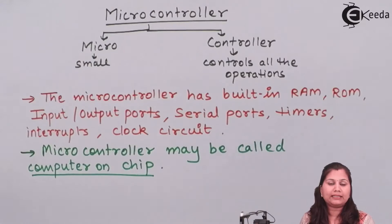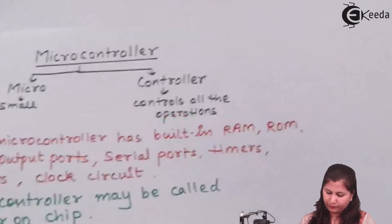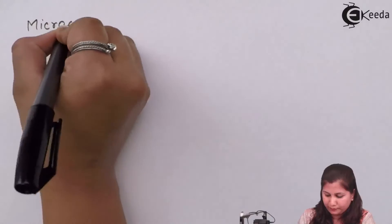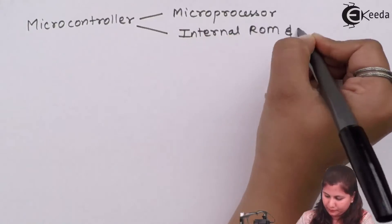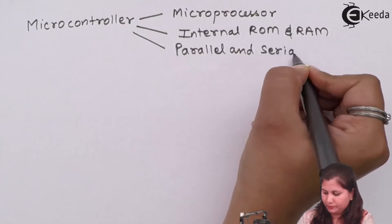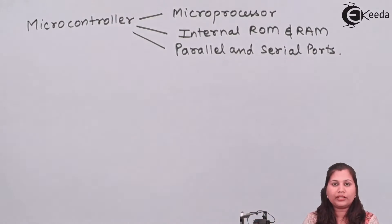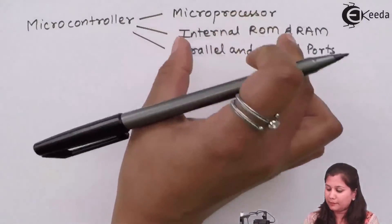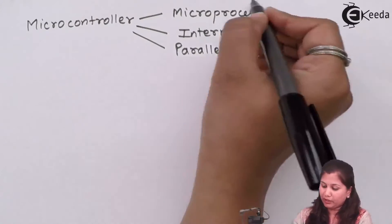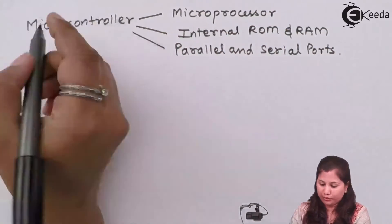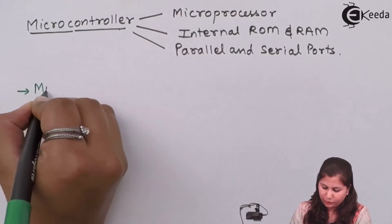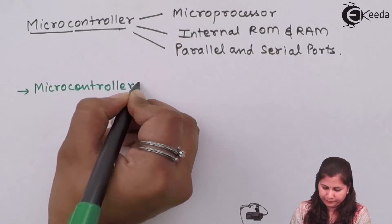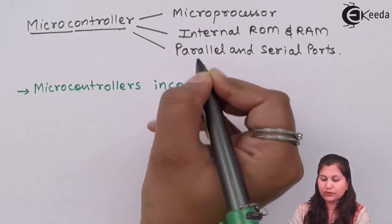But in the case of microcontrollers, because all things are on one chip, all the features of the microprocessors are contained in the microcontroller. So a microcontroller comprises the features of a microprocessor plus it has the memory section and the input-output section. We can say that microcontrollers incorporate all features of the microprocessor.